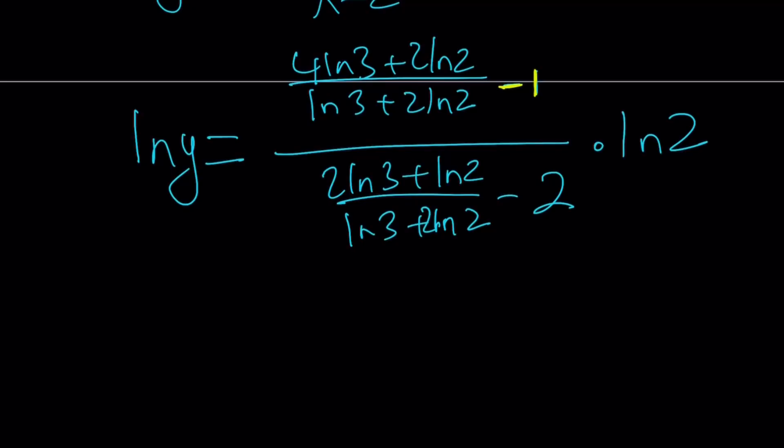And when I do, the denominators are going to cancel out. So let's completely forget about the denominators of the numerator and denominator. We get 4 ln 3 plus 2 ln 2 minus ln 3 minus 2 ln 2.